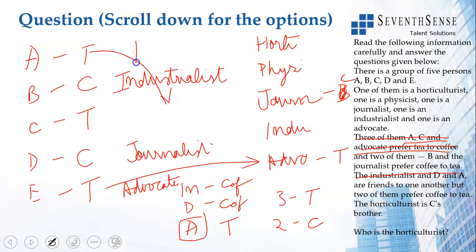Horticulturist is C's brother. Which means the only other person left is this kind. Horticulturist is C's brother. So C will be Physicist.